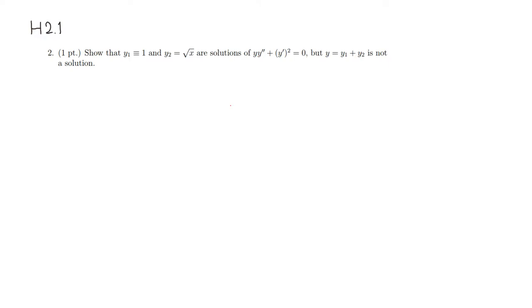So y1 is equal to 1, which means that y1 prime is going to be 0. And also y1 double prime is going to be equal to 0.